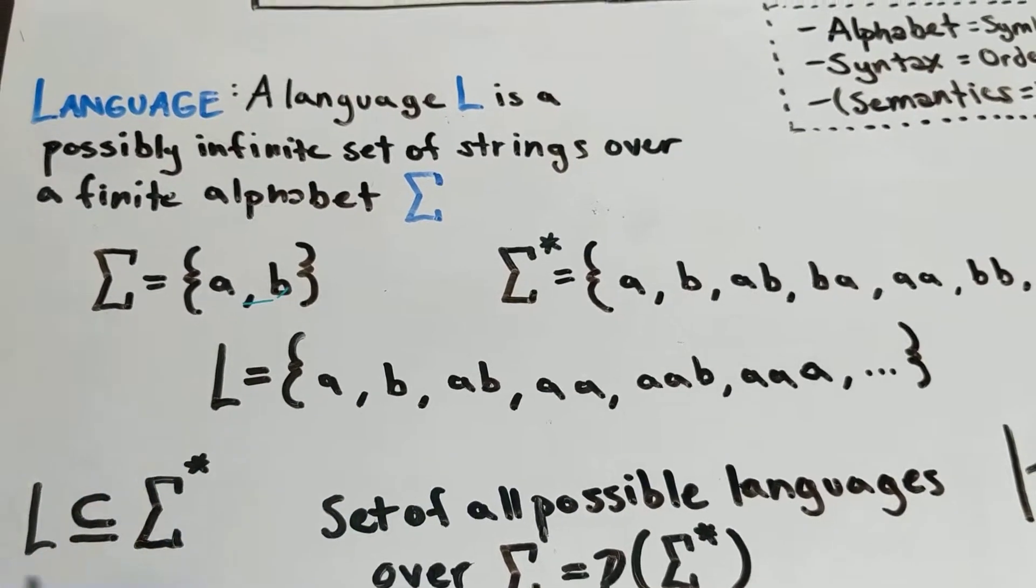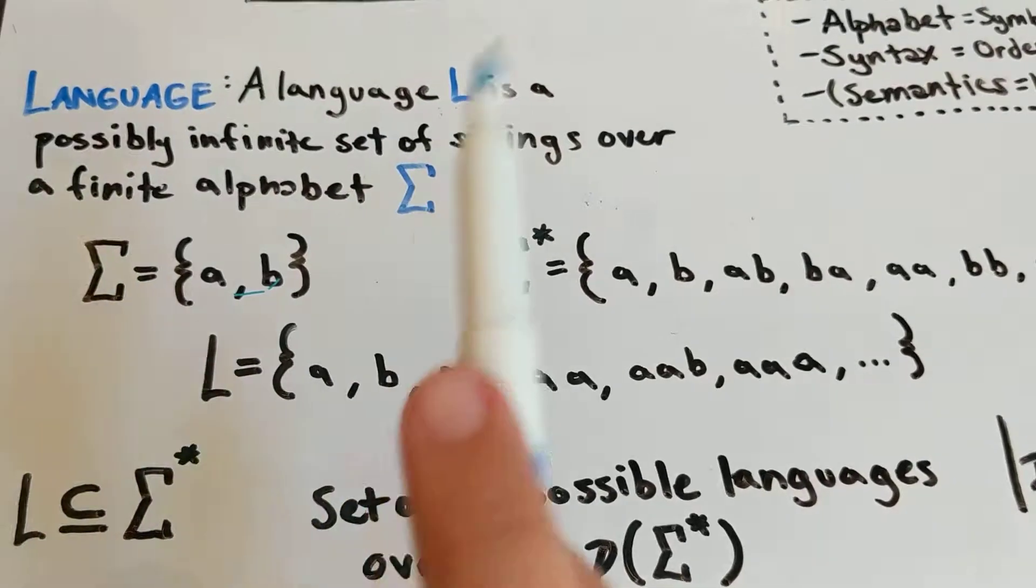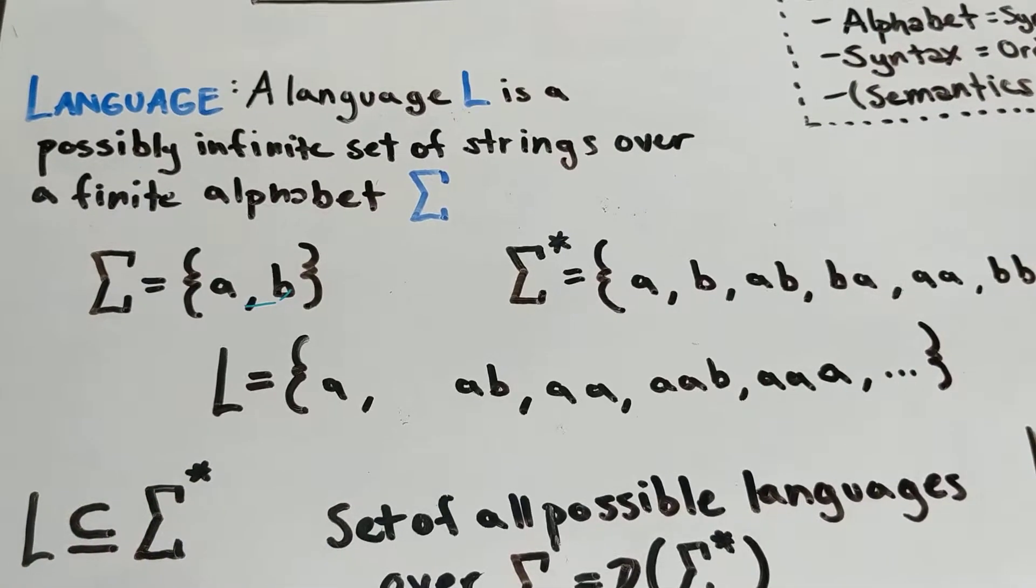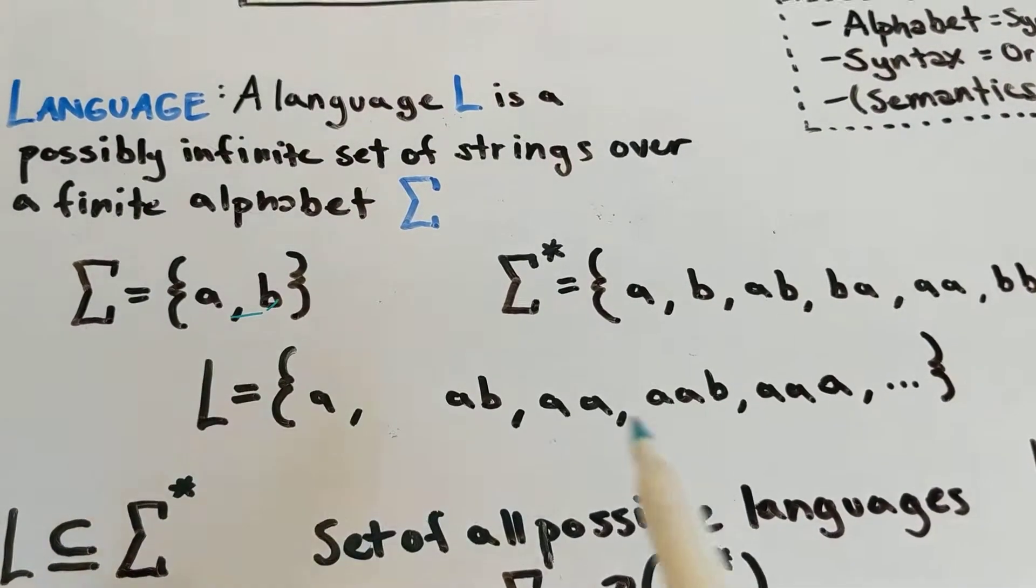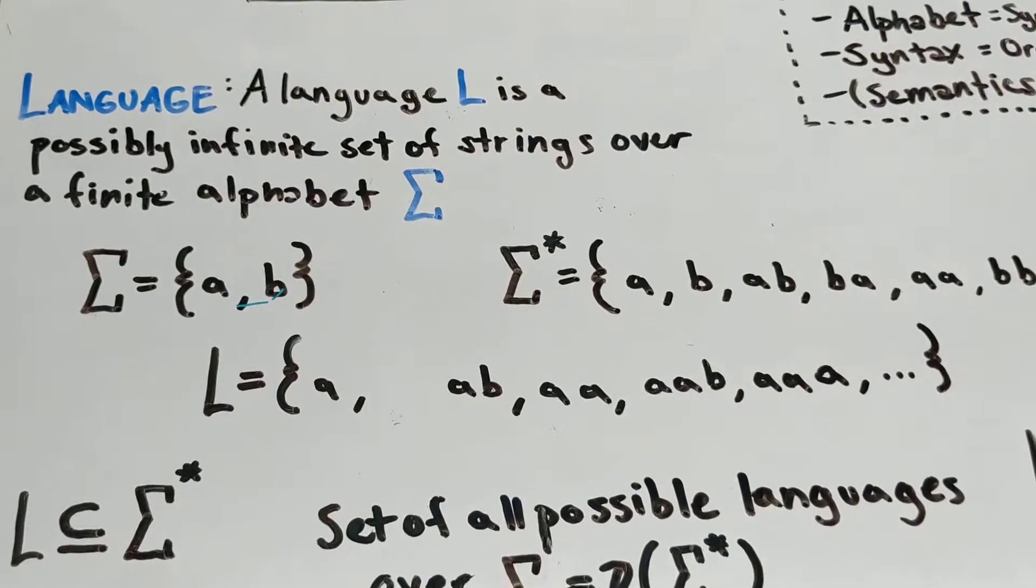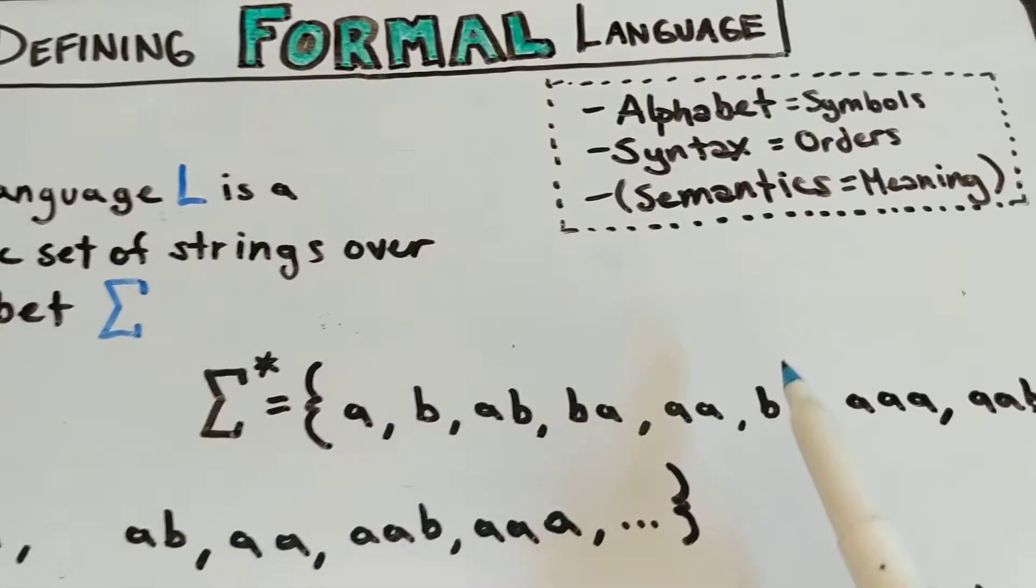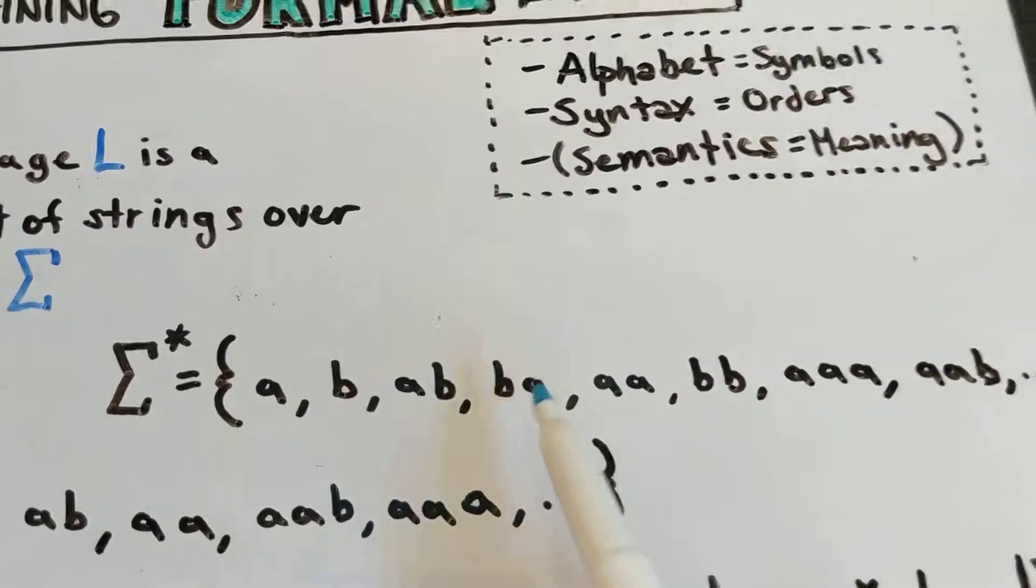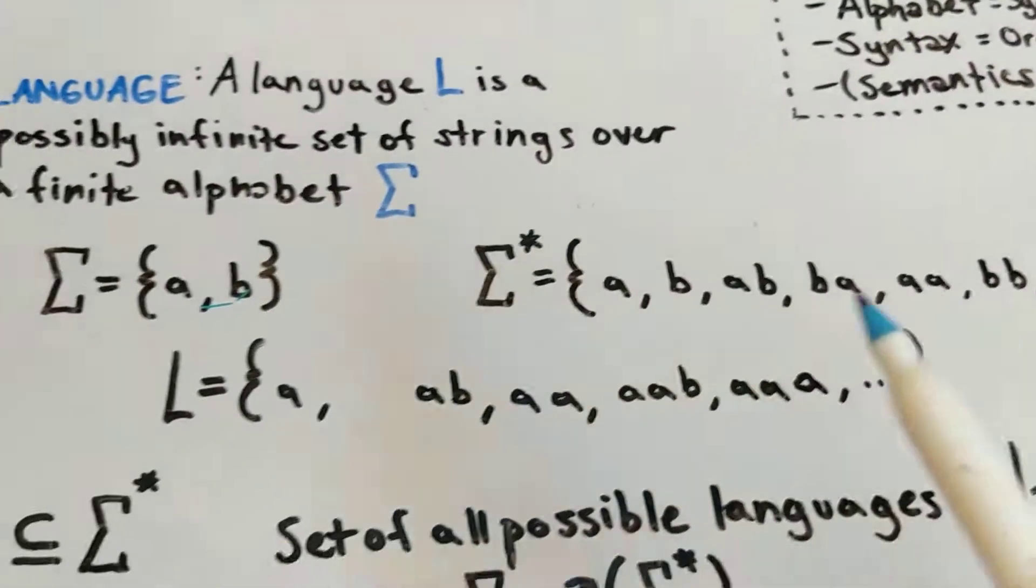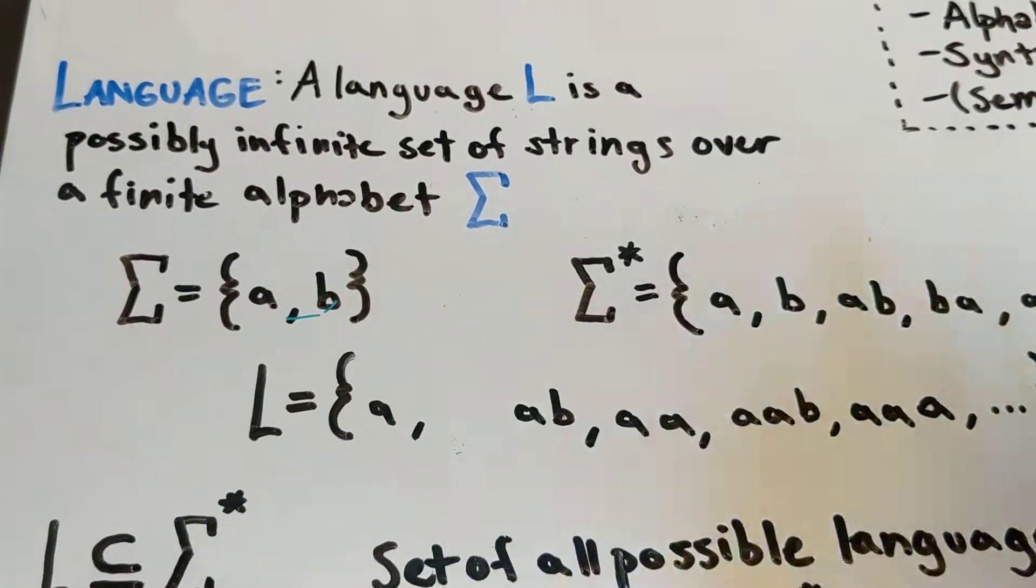So your language might be any sequence of A's and B's that starts with an A. So this would still be infinite, because you can still add A's and B's at the end. But it won't be as big, as infinite, as this set where you can start a string with a B.